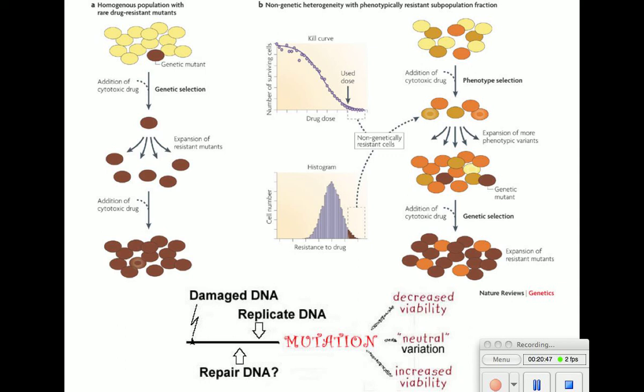Mutations occur from damaged DNA, and if the DNA is not repaired it gets passed on and replicated. Mutations always have three outcomes: it either helps you, it's neutral, or it hurts you.